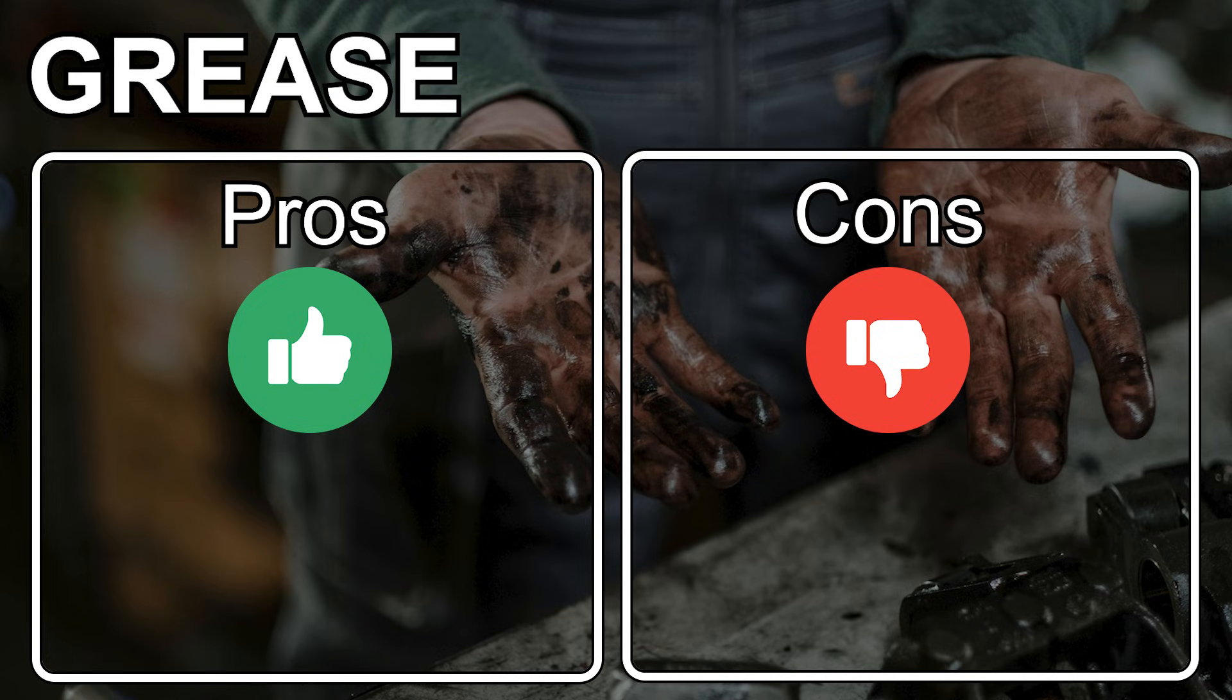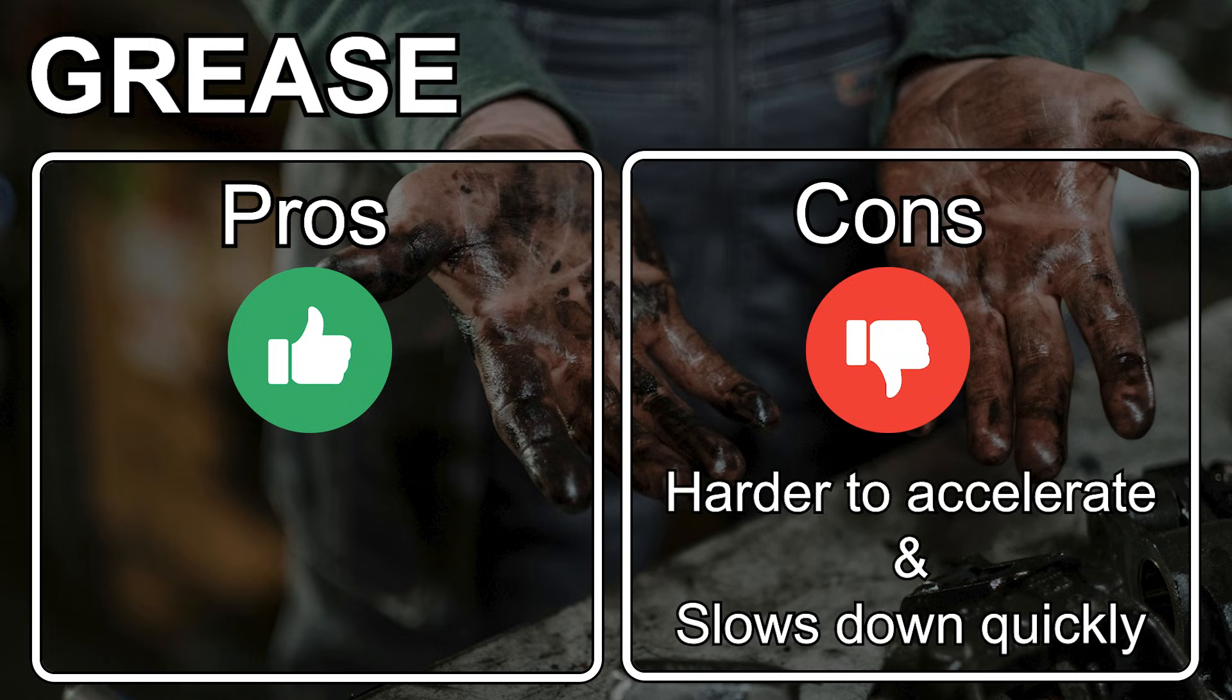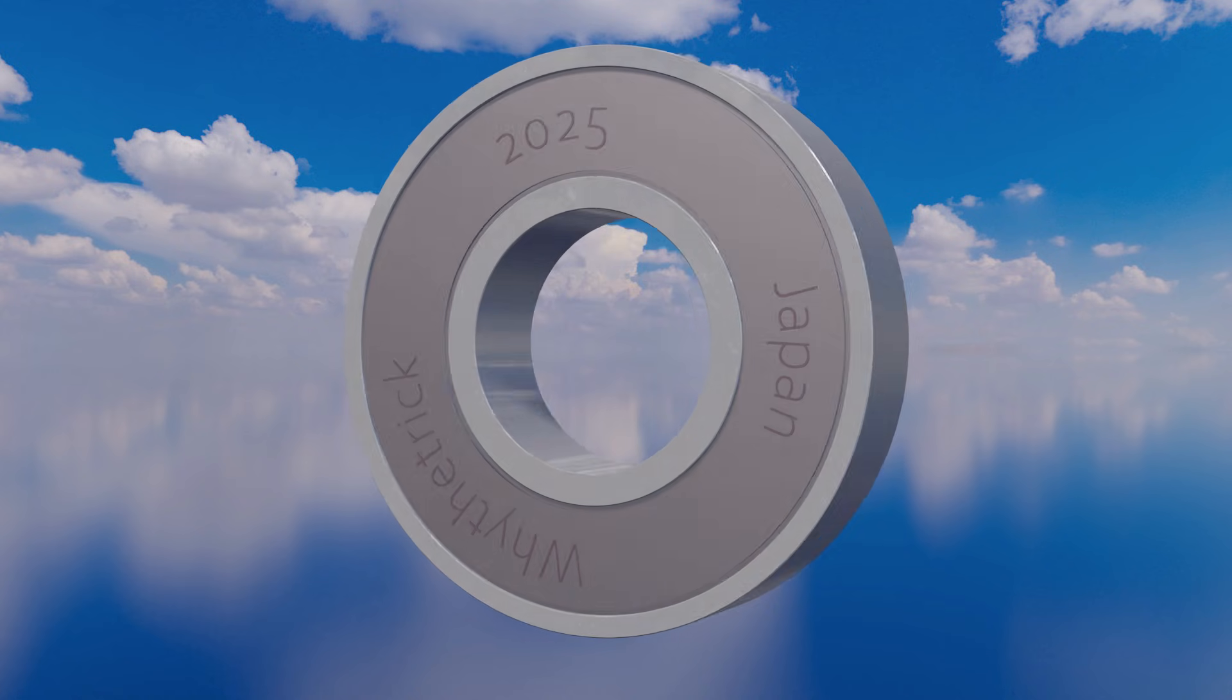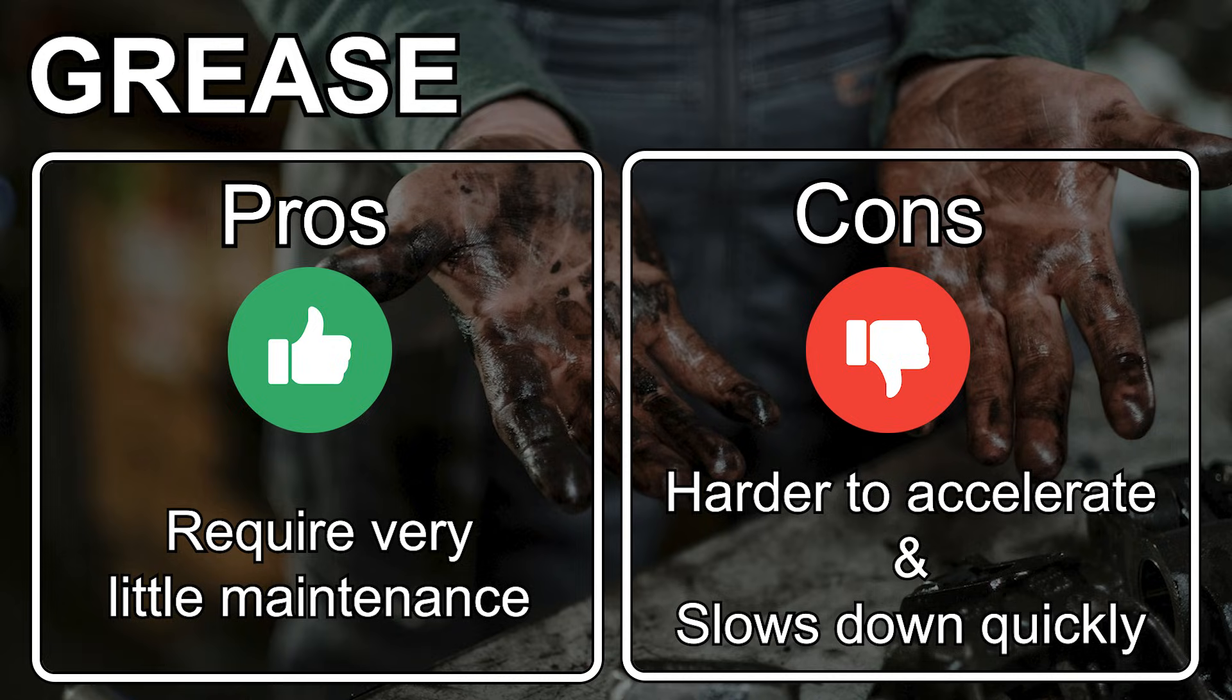Grease, on the other hand, has higher viscosity, so it's harder to accelerate and slows down more quickly. But many grease bearings are double shielded, which means they require very little maintenance.